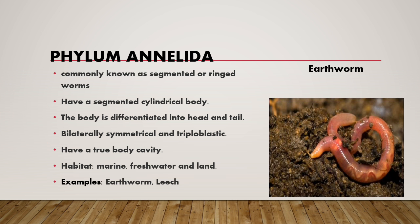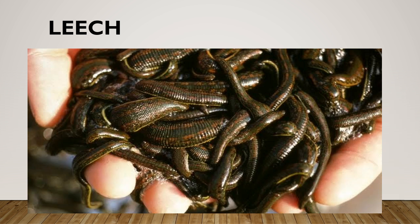You can see here the structure of an earthworm. It is a type of phylum in which they have a cylindrical segmented body — the body is differentiated into head and tail. They have bilateral symmetry and are triploblastic. They have a true body cavity and live in marine, freshwater, and land environments. You can see here the picture of a leech.